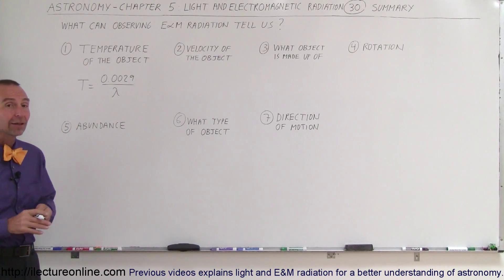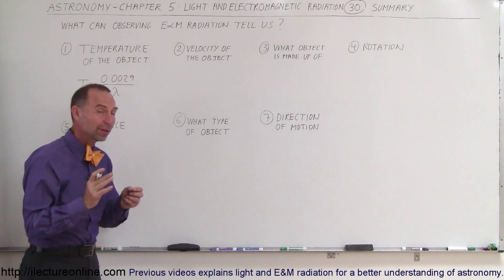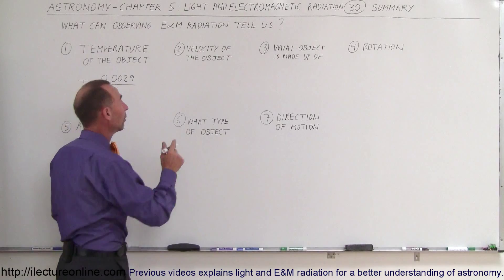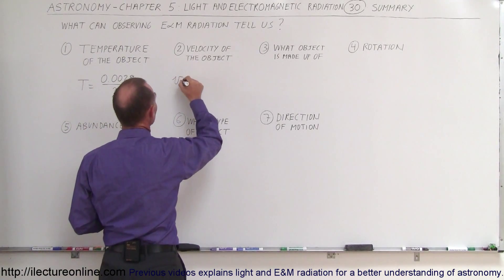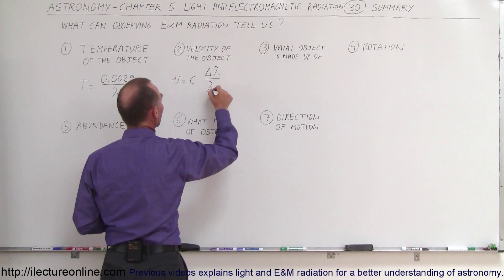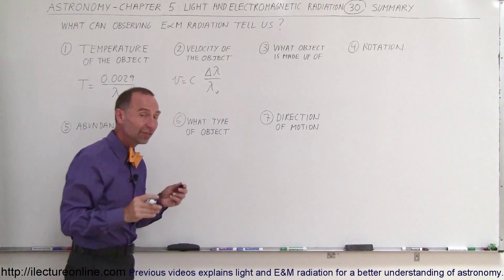Secondly, we can tell the velocity of the object. We know that if there's been a shift in the radiation wavelength from a known wavelength, we can say that the velocity is equal to the speed of light times the amount of the shift divided by the original shift of the object if it was not moving.